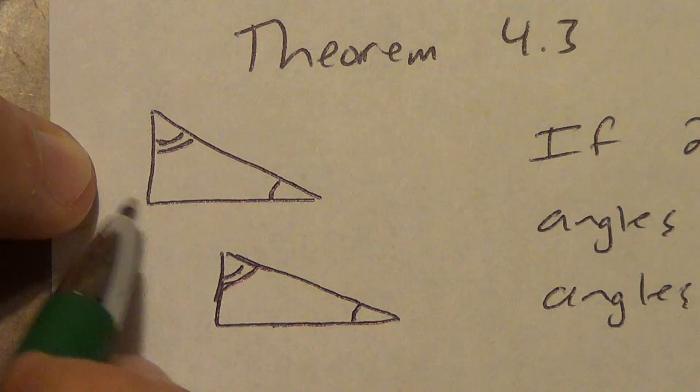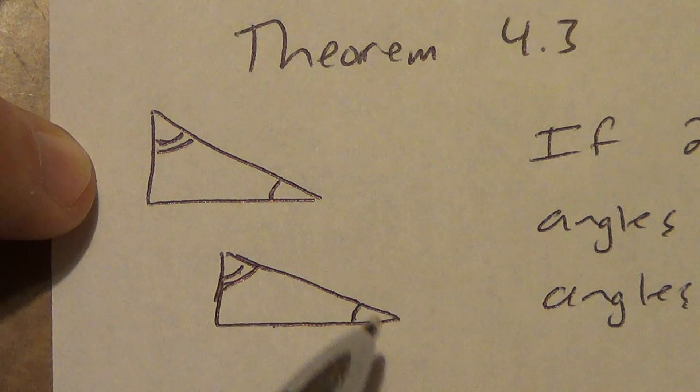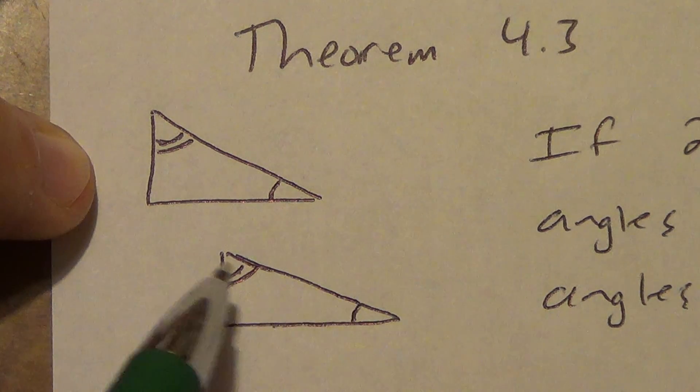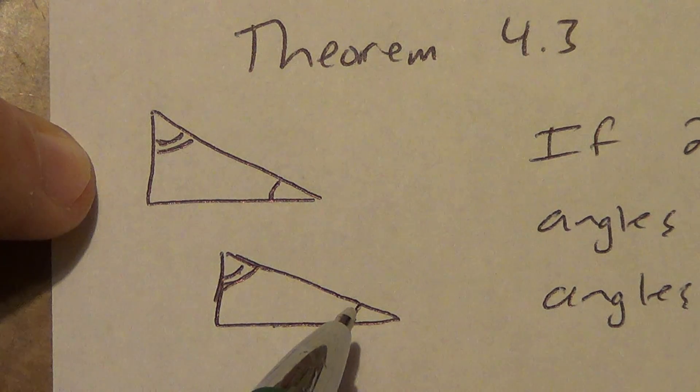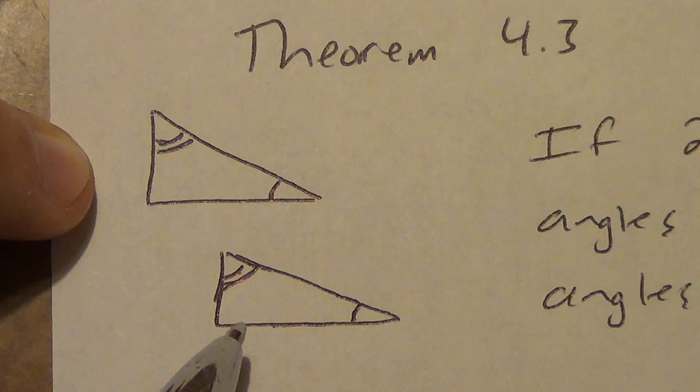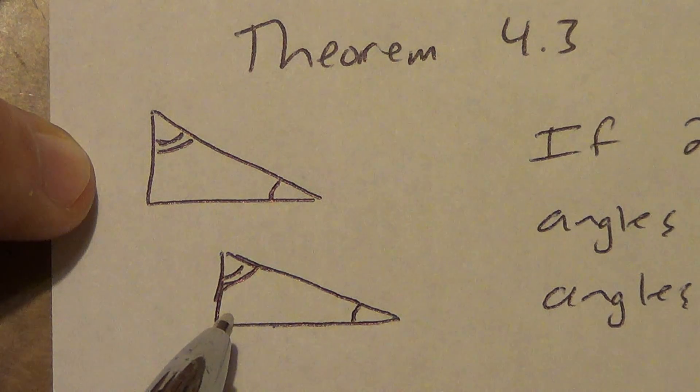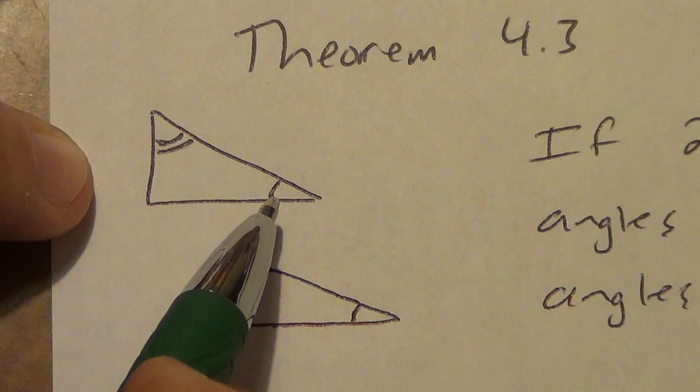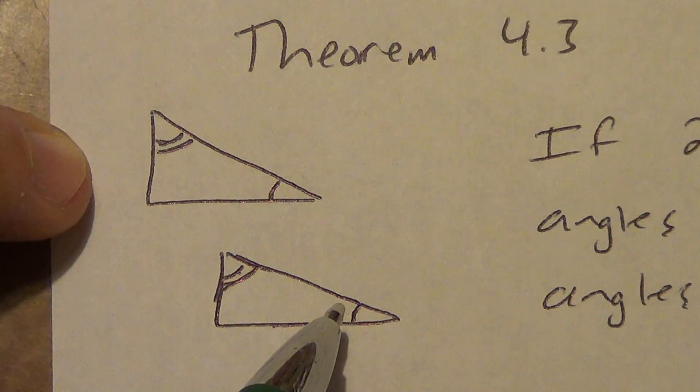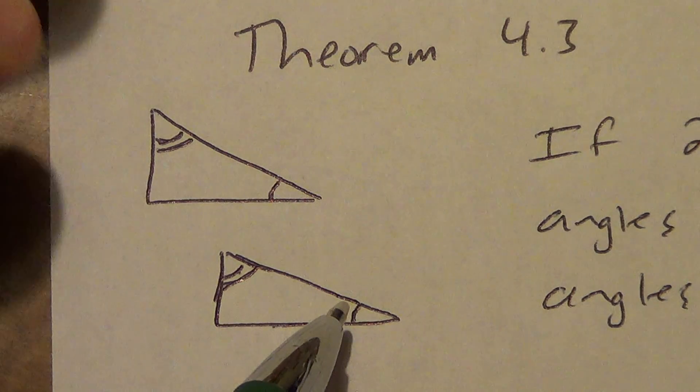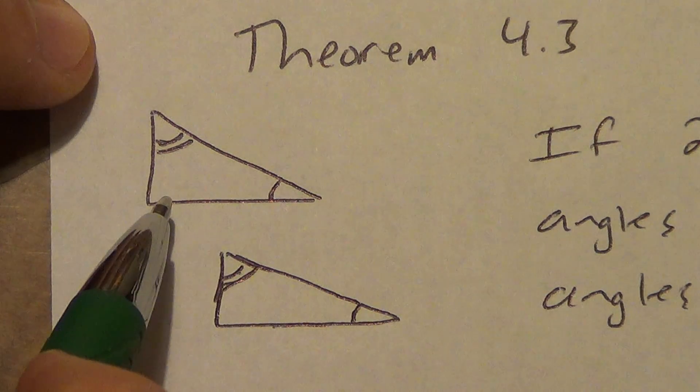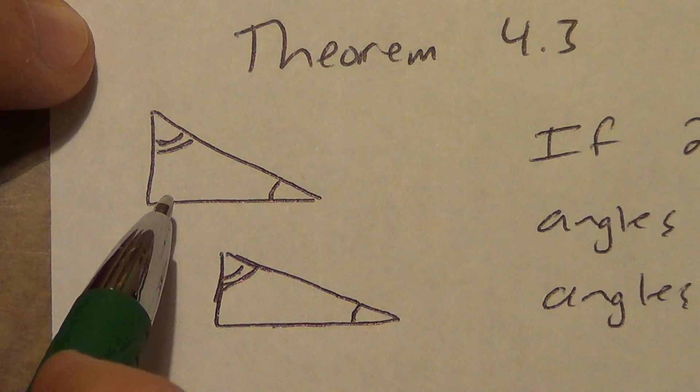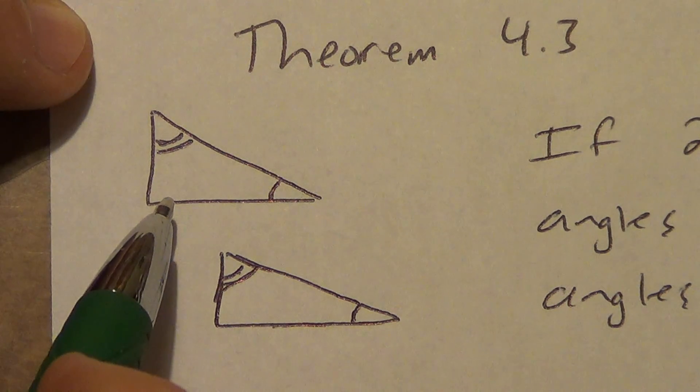But what we do know is that that angle and that angle are congruent to that angle and that angle. Now, we know that all three angles add to equal 180. And here, all three angles add to equal 180. Well, if you take two numbers and add them together, whatever they might be, and then subtract from 180, that would give you this answer. Well, up here, you would be taking the same exact two numbers, adding them together, which would give you the same exact answer you got down here when you added them together, and then subtract from 180 again. Guess what? You're going to get the same exact answer.